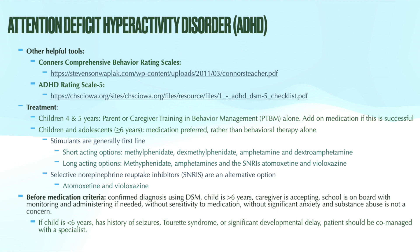We also use selective norepinephrine reuptake inhibitors, or SNRIs. Two examples used for this are atomoxetine, also known as Strattera, and viloxazine, which is a less commonly seen alternative. Atomoxetine is becoming increasingly more popular because, as an SNRI rather than a stimulant, it's not a controlled substance and is much less likely to be abused. However, stimulants have shown to be more effective in treating ADHD symptoms. Importantly, SNRIs are contraindicated with concurrent use of MAOIs, or if the patient has discontinued an MAOI within the last 14 days.